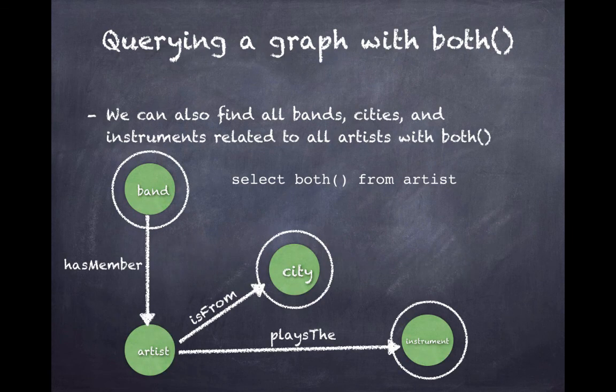We can query a graph with the function BOTH as well. We notice that an artist is related to a band by hasMember pointing IN to it. We can see that artist has an edge pointing OUT called isFrom that goes to a city, and an artist has an edge going OUT called playsThe which points to an instrument.